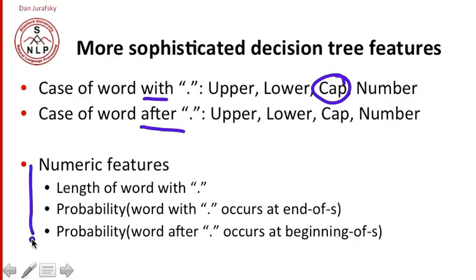And we can look at lots of numeric features. So we can look at, am I a long word or a short word? So abbreviations tend to be relatively short. Acronyms tend to be very short. And I can use very sophisticated features.